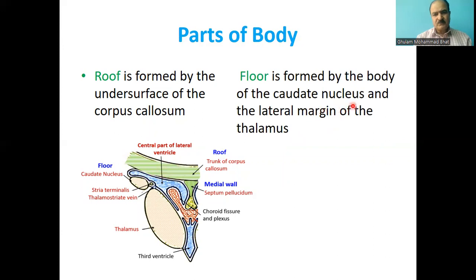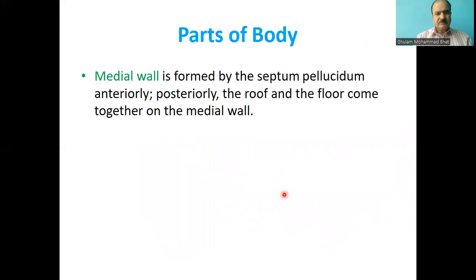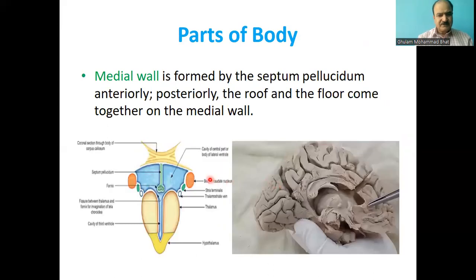The floor is formed by the body of the caudate nucleus and the lateral margin of the thalamus. The medial wall, as seen in previous pictures, is formed by the septum pellucidum. The septum pellucidum has been removed here to open the cavity of the lateral ventricle.